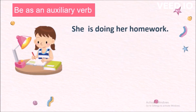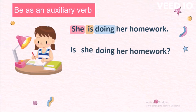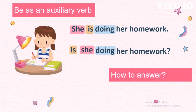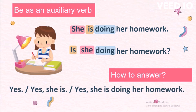In 'She is doing her homework,' she is the subject, is is the helping verb, and doing is the main verb. To form the question, we change the word order of the subject and the helping verb: Is she doing her homework? First the helping verb, then the subject, then the main verb, and the rest of the sentence. How to answer: yes, or yes she is, or yes she is doing her homework.